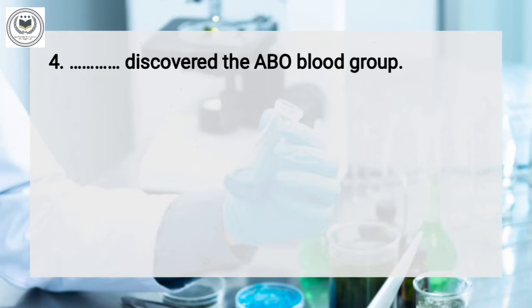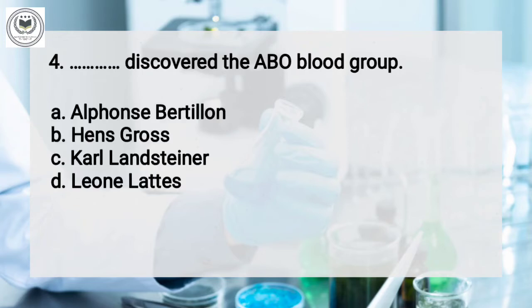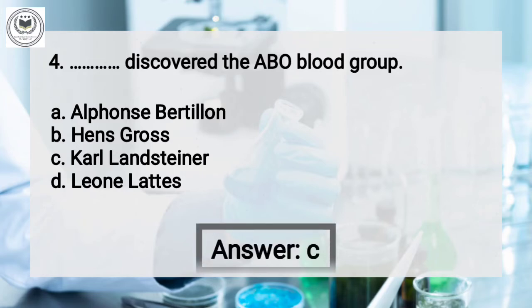Question number 4: who discovered the ABO blood group? Option A: Alphanbethlin, option B: Hensgross, option C: Carl Landsteiner, option D: Leon Lattice. And the answer is Carl Landsteiner.